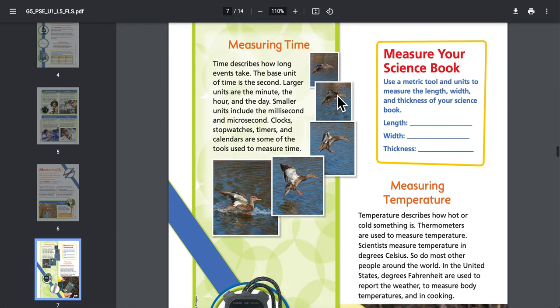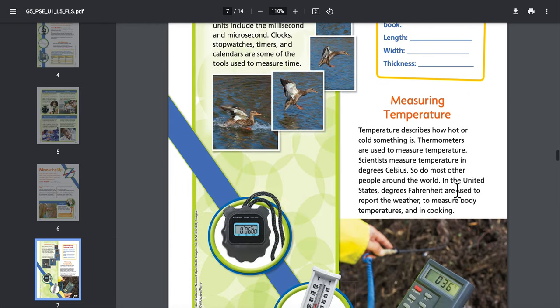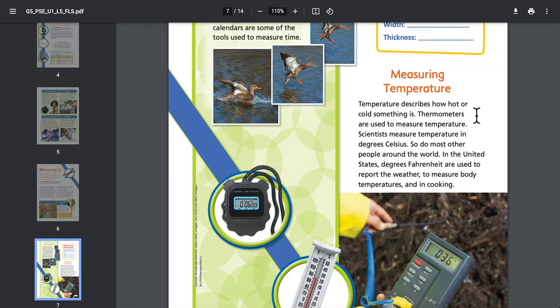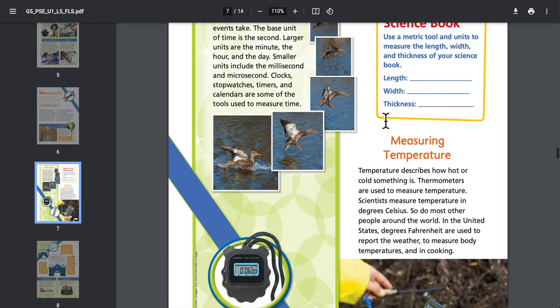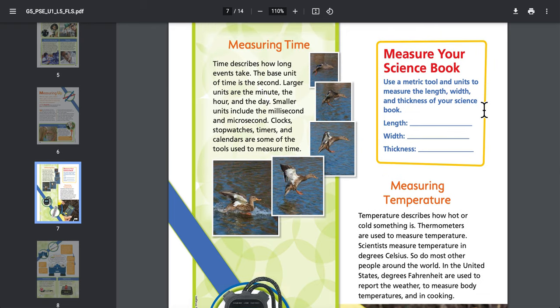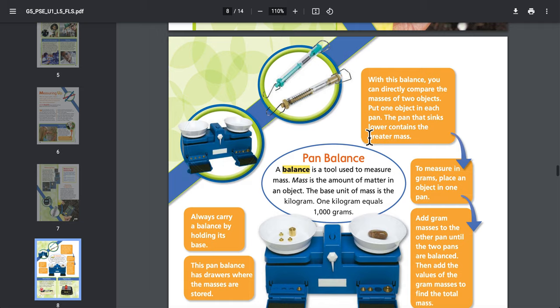Measuring temperature: Temperature describes how hot or cold something is. Thermometers are used to measure temperature. Scientists measure temperature in degrees Celsius. In the United States, degrees Fahrenheit are used to report the weather, to measure body temperatures, and in cooking. Measure your science book: Use a metric tool and units to measure the length, width, and thickness of your science book.